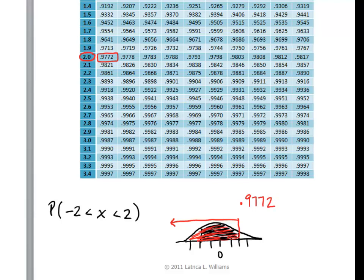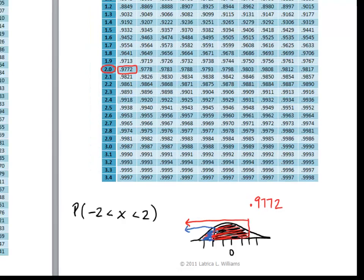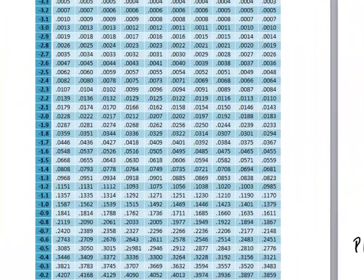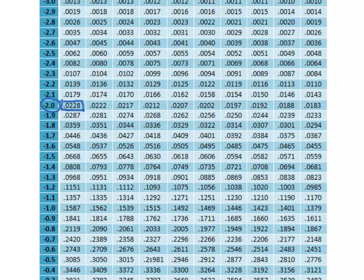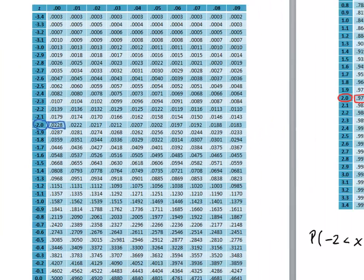Next, I'm going to find the area that's to the left of negative 2. That's all of this shaded piece. I go to negative 2 in the table, and its corresponding probability is .0228.